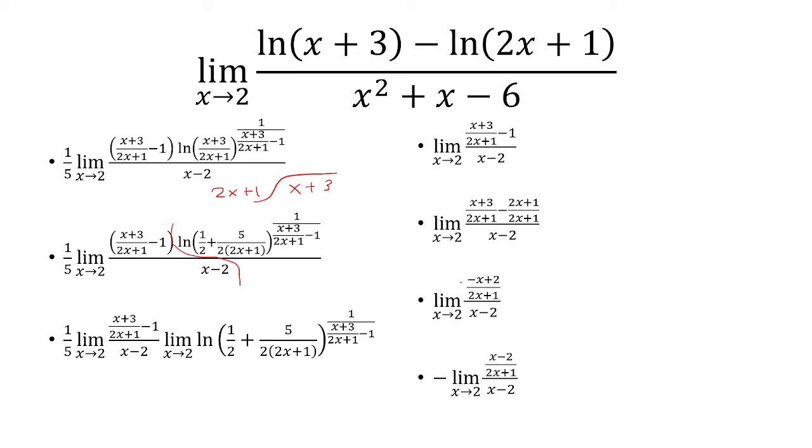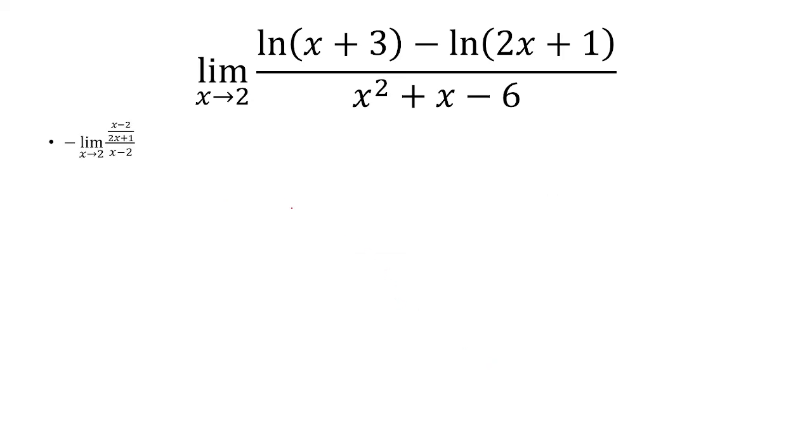And now I can factor out a negative from the top, and then you basically multiply everything by negative 1. So negative x becomes x, 2 becomes negative 2. Everything else stays the same. The x minus 2's cancel. We're left with 1 over 2x plus 1, and so the limit there is negative 1 fifth.